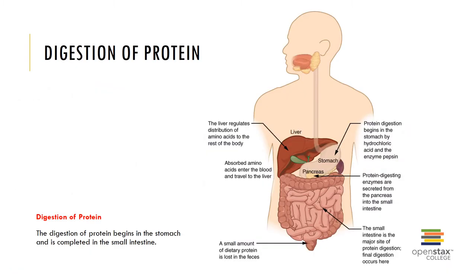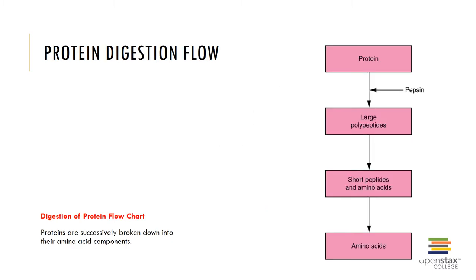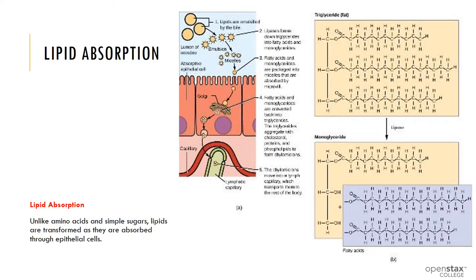Protein digestion begins in the stomach and is completed in the small intestine. The stomach's acidic environment with a pH of around 2 is optimal for enzymes that work on protein digestion. Proteins are successively broken down into their smaller monomers — the amino acid components — allowing cells to transport amino acids across the cell membrane for absorption. Unlike amino acids and simple sugars, lipids are transformed as they are absorbed through epithelial cells.